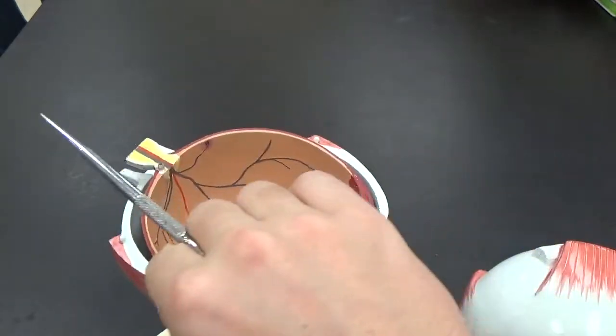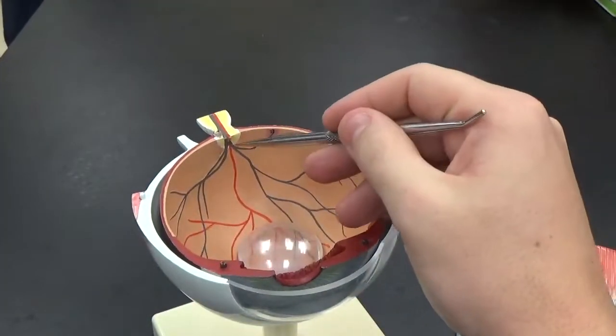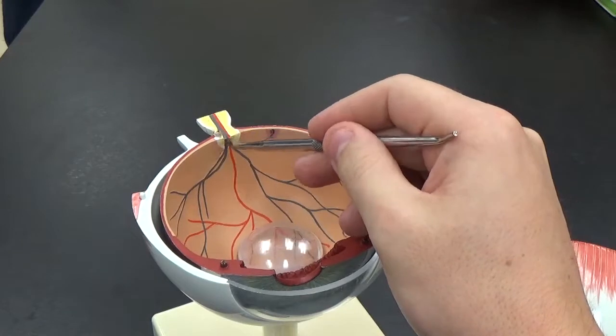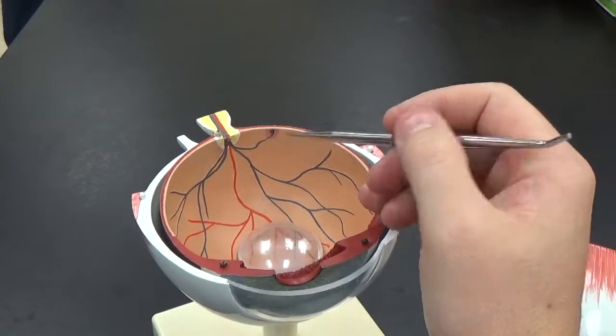We can see the optic disc right here. That's where the optic nerve is coming into the retina.